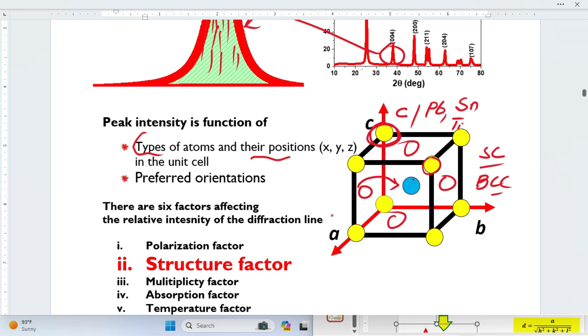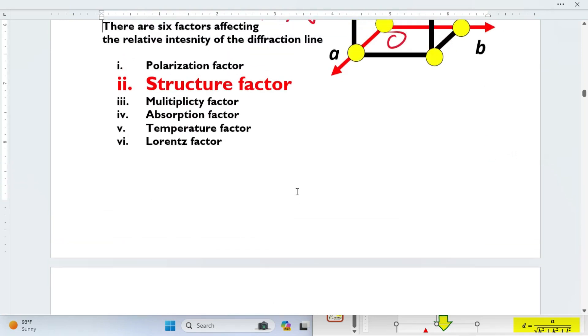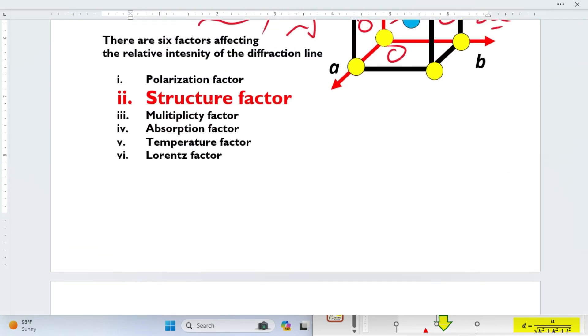The second important parameter is basically the orientation, whether the crystal has growth texture. Whether the atoms have long range order or a small range order. There are six parameters which affect the intensity, but I will only talk about the structure factor.